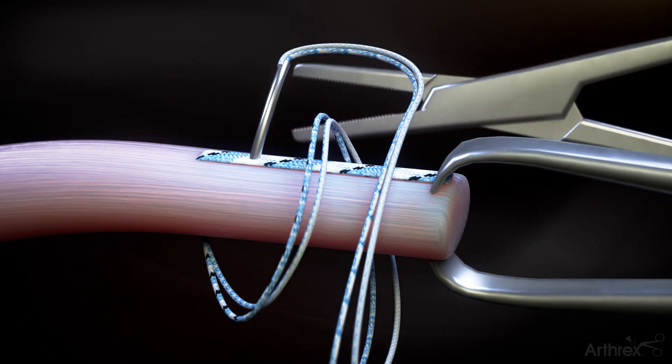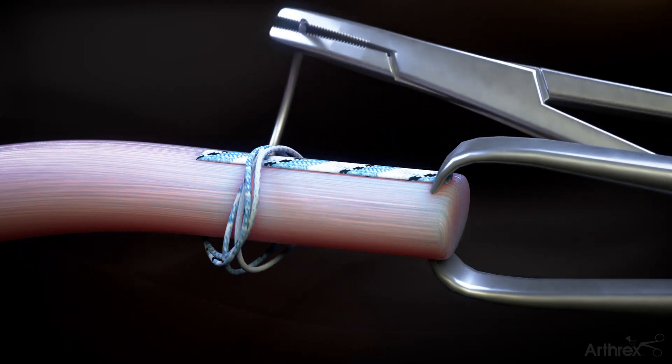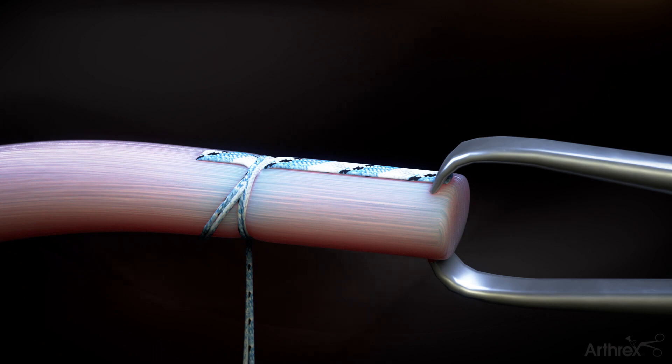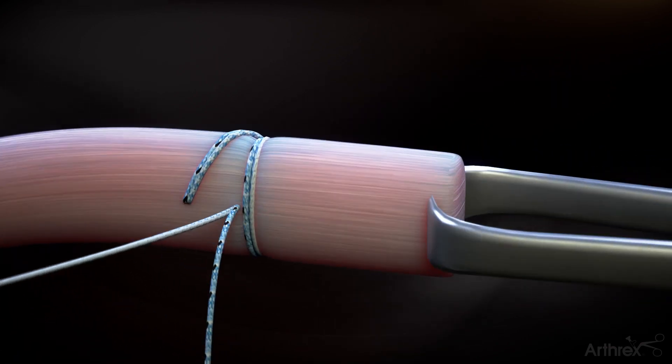Take care to pass the needle behind the suture limbs on the underside to create a rip stop. Be sure to tension each limb independently to ensure the stitch is secure.